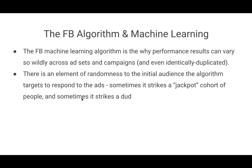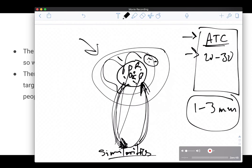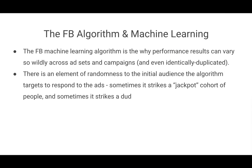And sometimes the initial cohort of people the algorithm randomly tries out just don't respond to the ad at all — it strikes a dud — and as a result the campaign does not perform as well. There's always an element of randomness to any new campaign or ad set, which is why many times if you launch an ad set and it's a dud and you duplicate it, you can often get very different results. It all comes down to that initial handful of people it randomly sends the ads to — how they respond affects the initial learning and optimization, which affects future responses, creating either a positive or negative cycle.